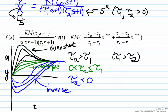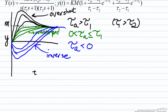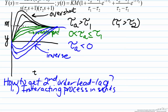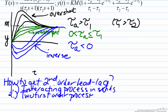The question now is: how can you get an inverse response? Or in other words, how can a tau a value be negative? To show this, let's first consider how to get a system which is a second order lead-lag. There are two major ways this can happen: the first is via an interacting process in series, and the second — which more commonly leads to inverse responses — is when you have two first order processes in parallel.